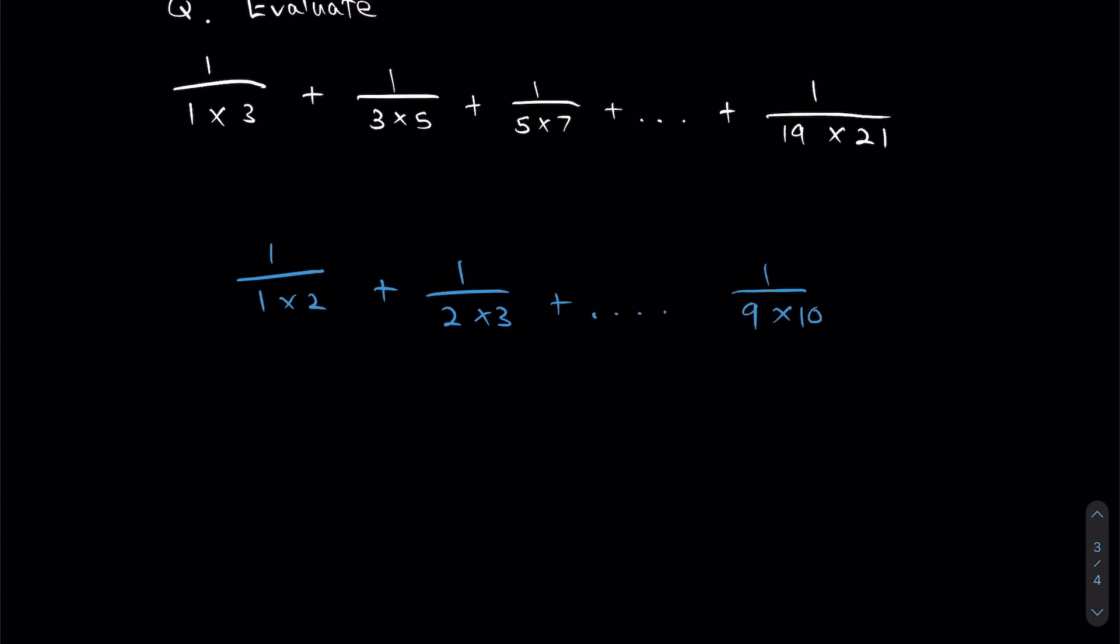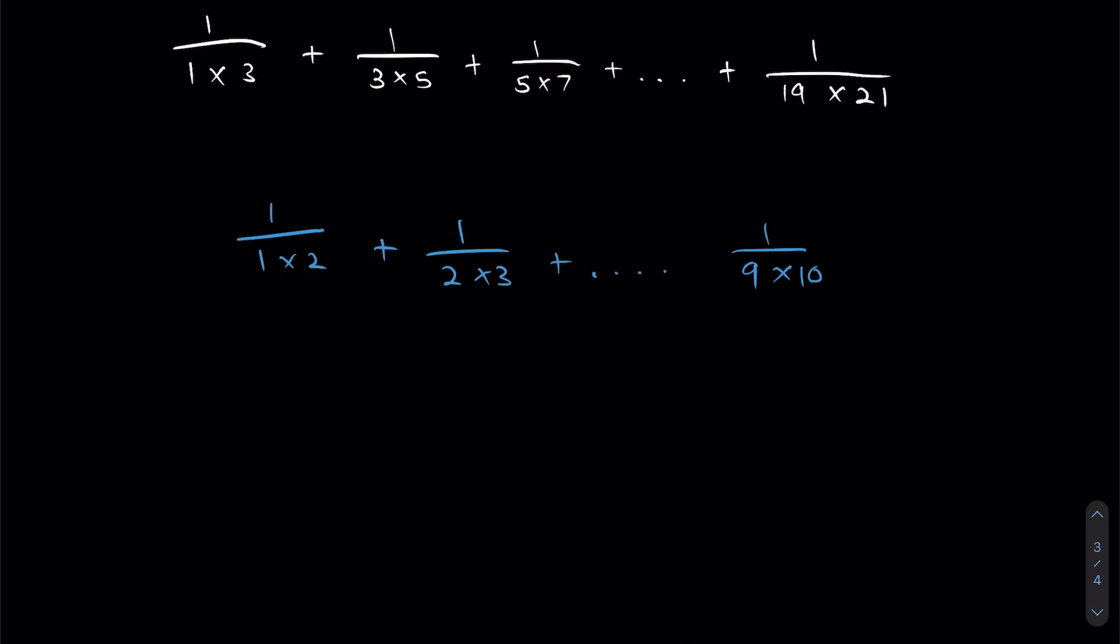So let me run you through how to do the 1 in blue first, because that's the simpler of the two. So 1 over 1 times 2, this can actually be split into 1 over 1 minus 1 over 2.